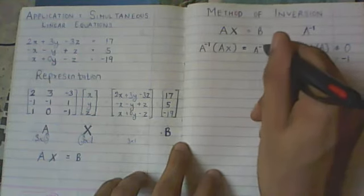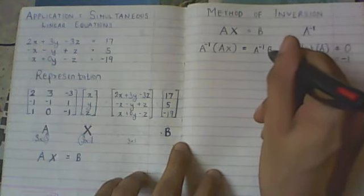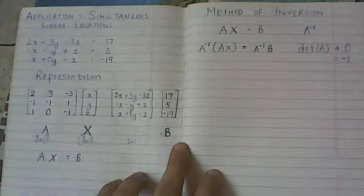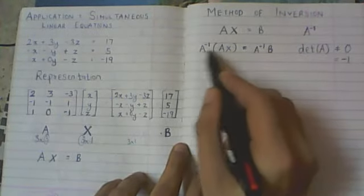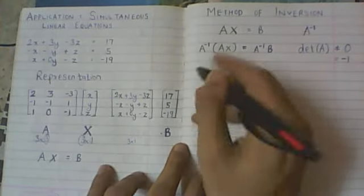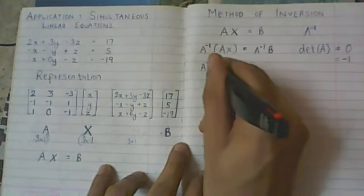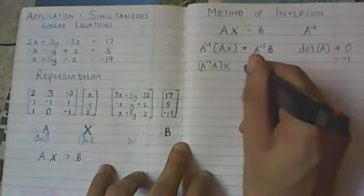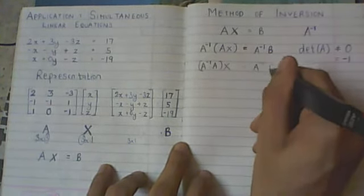So I multiply this with A inverse as well. And then you will realize that here by associativity, I can say that this is as good as A inverse A times X and which is equal to A inverse B.